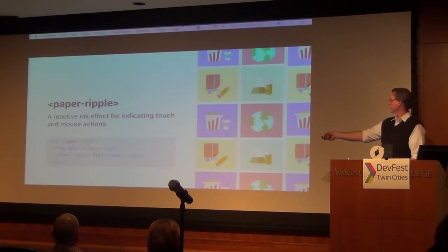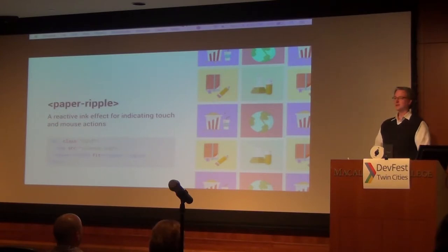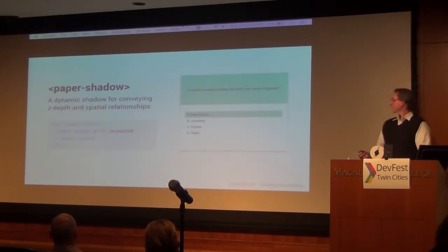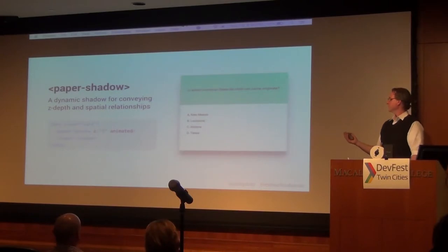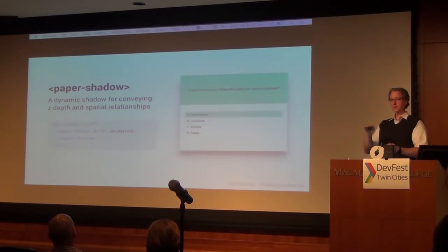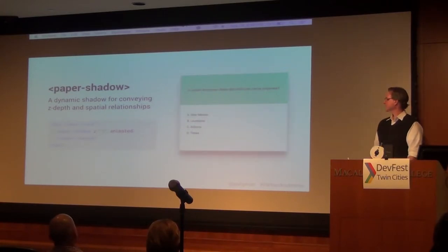You just put your paper-ripple tag inside of a div, add the fit attribute to it, and it will expand the paper ripple all the way out to the edges of that containing element. Not a bad effect for a single line and 20 characters. Another iconic paper element is paper-shadow and the Z depth — the idea that elements should have layers. You should have a sense of what elements are on top of others on the page. It makes your elements spring to life and have a nicer feel and reaction.